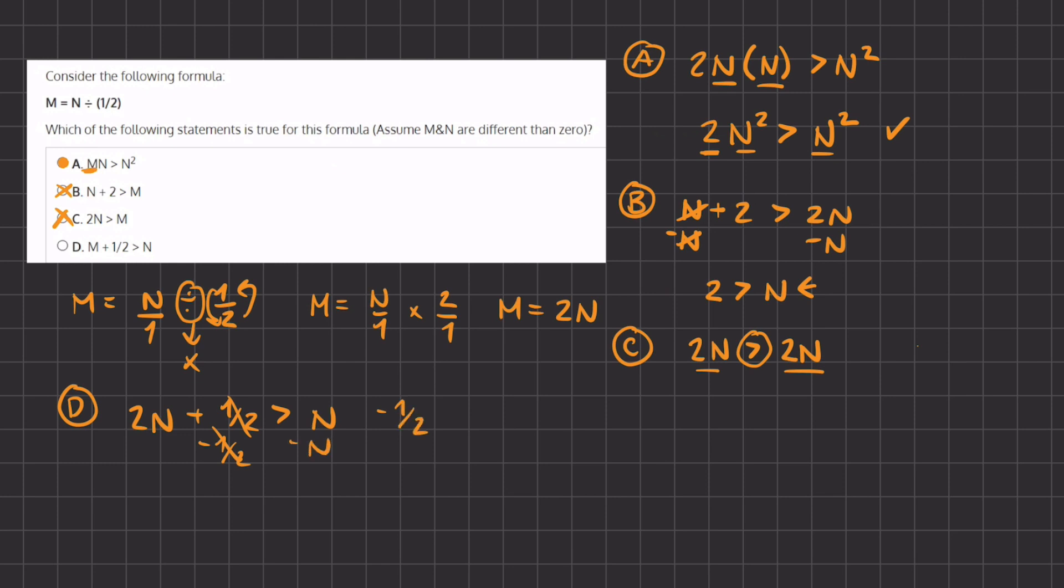and we subtract N on both sides to get all the variables on the left-hand side and all the numbers on the right-hand side, we are left with N is greater than negative half.